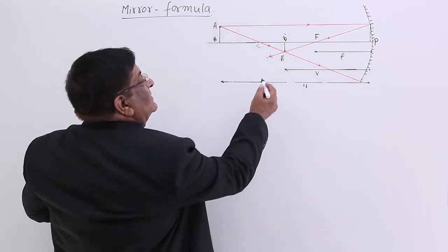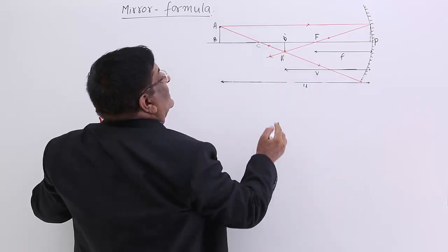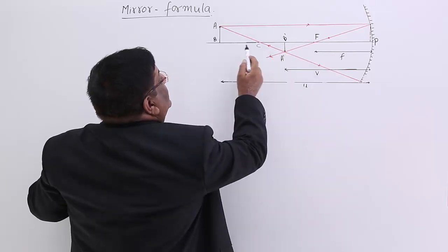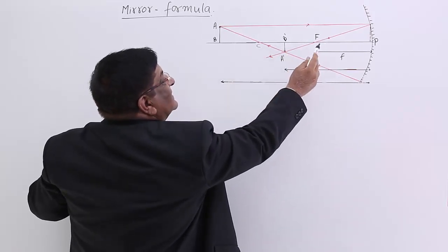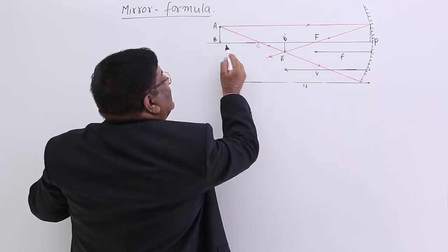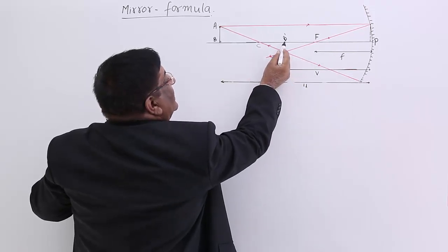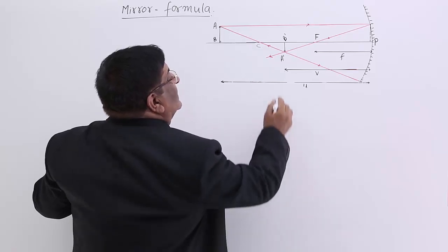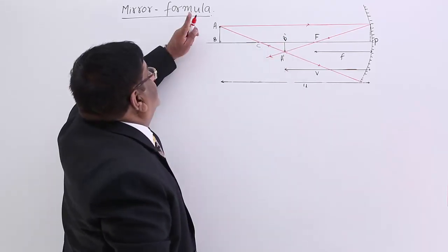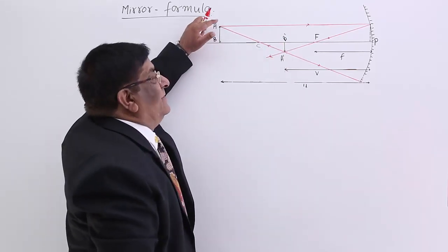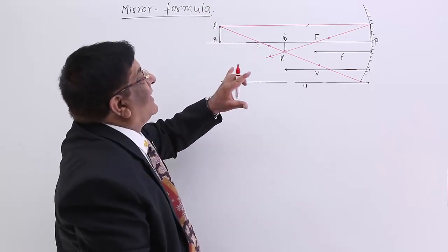So this point appears to be the image of A, from where these two rays are reflected. This is the image of A at this point. Image of B will be on the principal axis, and there is a right angle, so we draw a perpendicular. This is the location of B, and we get A'B' as the image of AB.